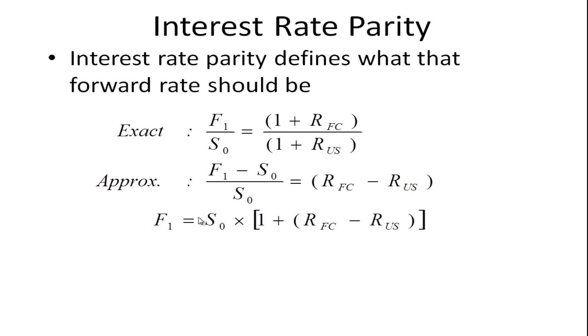We can also do a little manipulation here. We multiply both sides by S_0, then add S_0 to both sides and factor out S_0 to get this equation: the forward rate equals the spot rate times one plus the difference between the two interest rates.